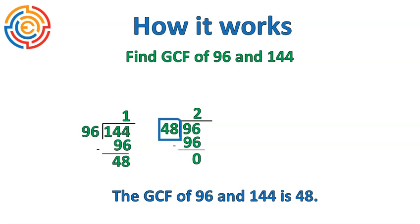That's it. This method requires that you do some long division, and it may require several steps. But what it saves you doing is listing all of the factors of 96 and 144 and searching for the greatest common factor.